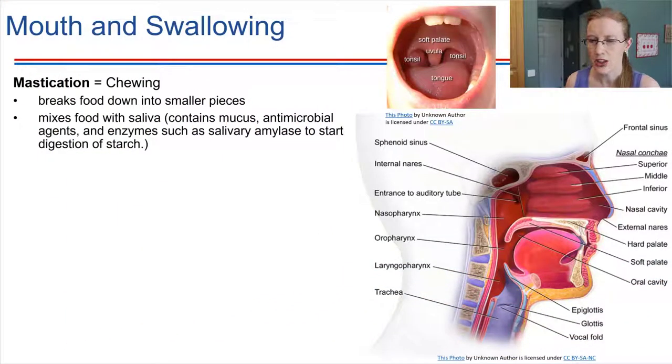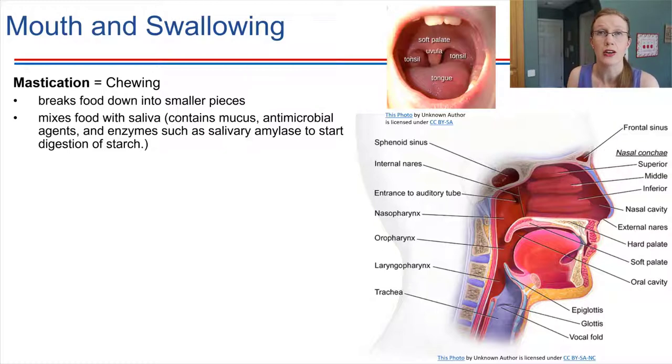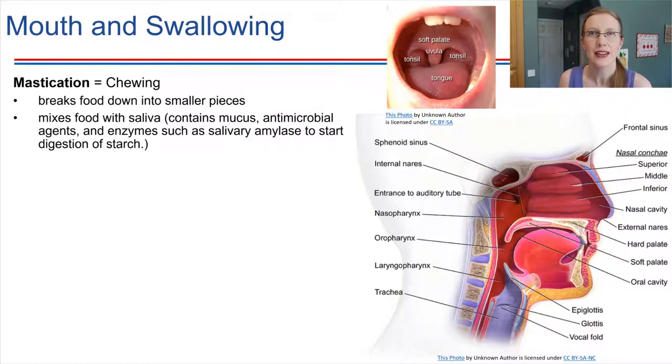We're going to start our tour of the digestive system right at the beginning of the GI tract, right where we take food in at the oral cavity, starting in the mouth. Digestion actually begins in the mouth — saliva contains enzymes that are active right from the get-go. One of the things that really helps with digestion is to mechanically break the food down into smaller pieces. Chewing, called mastication, allows us to break food down into smaller bits, making it easier for saliva to work on the food.